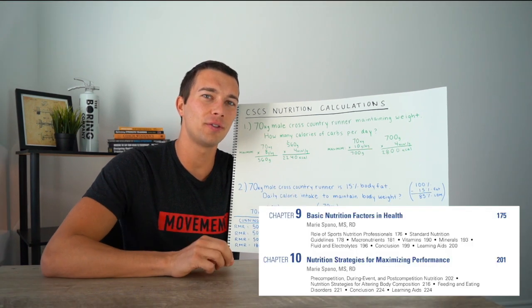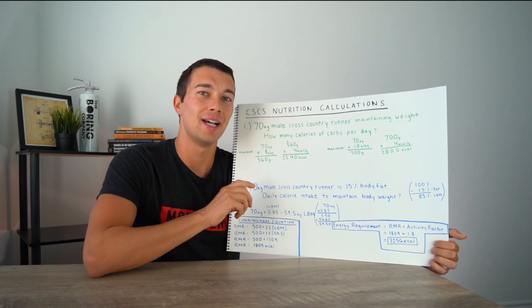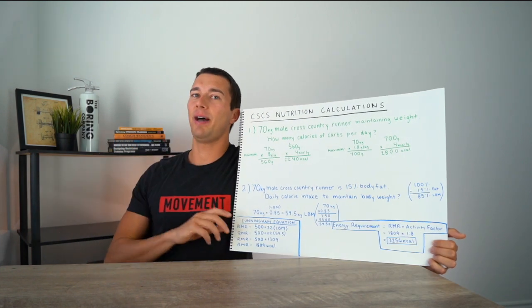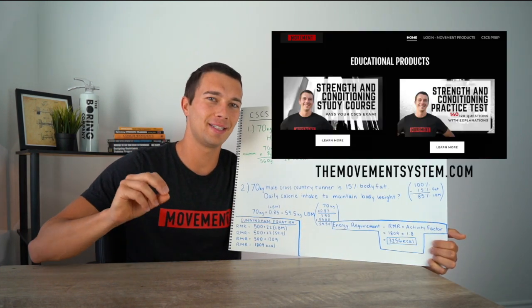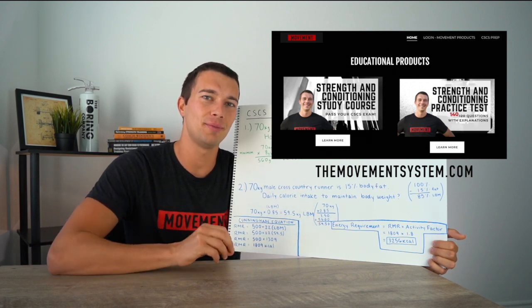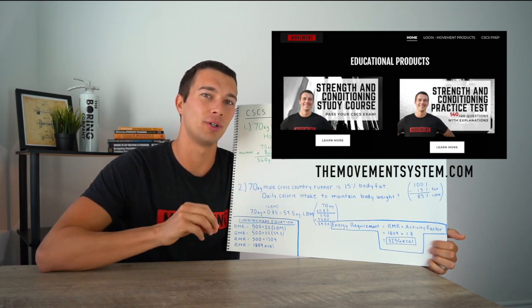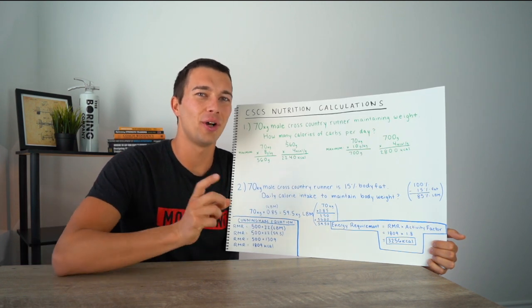We're gonna talk about some information from the CSCS book and go through some calculations with these question examples. Some of you guys have been asking about the books in the background of my videos, so I did add those to themovementsystem.com. You can also check out my CSCS study material on themovementsystem.com for more practice questions like this, and you can check out the full study course if you're interested. All right, so let's go ahead and dive into it.